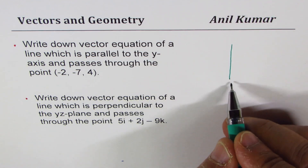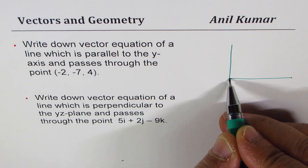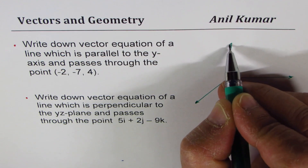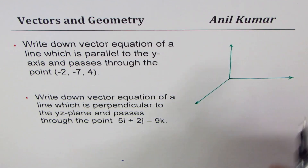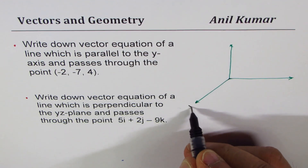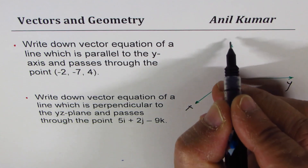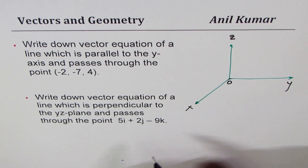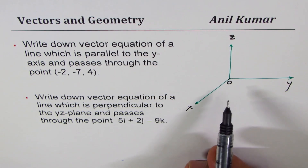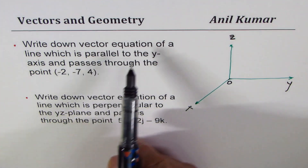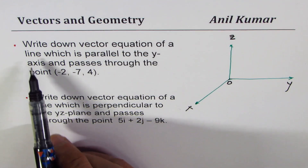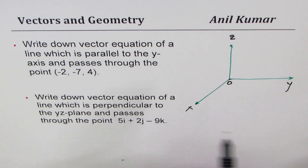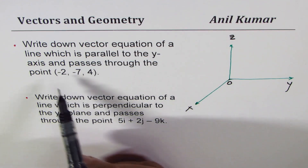Let me draw our three-dimensional plane here. Normally we take x along this direction, y, and z — that's the origin. Now what do we need? We need to write the vector equation of a line which is parallel to the y-axis and is going through a given point.